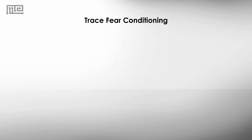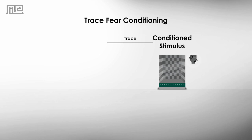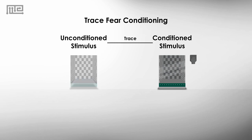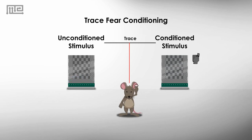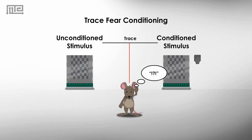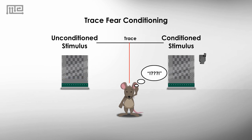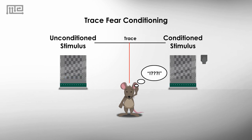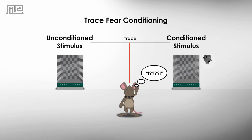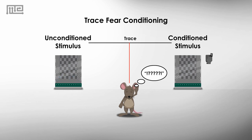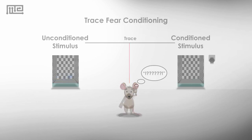In trace fear conditioning, there is a time interval — a trace — between the conditioned stimulus and the aversive unconditioned stimulus. As the trace increases, the association becomes more difficult to learn. This test is more complex and requires additional brain regions in order to establish the response.